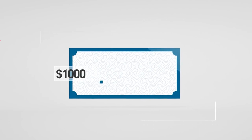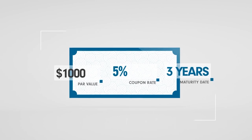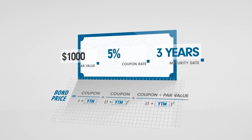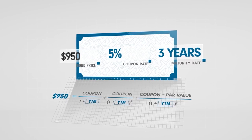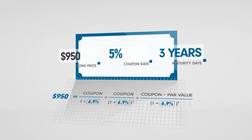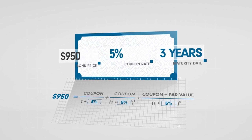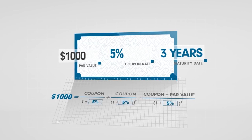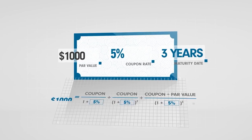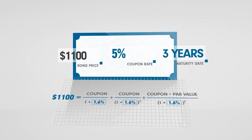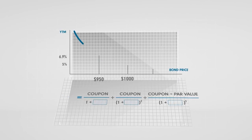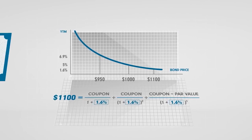Let's again look at our bond with a par value of $1,000, 5% coupon rate, and three years to maturity. If you buy this bond at $950, your YTM would be 6.9%, higher than the 5% on offer if you bought it at par value of $1,000. If you buy it at $1,100, the YTM would be 1.6%. As you can see, the lower the bond price, the higher the YTM.